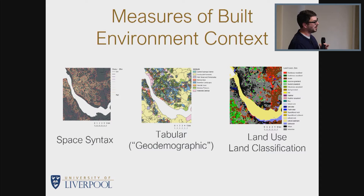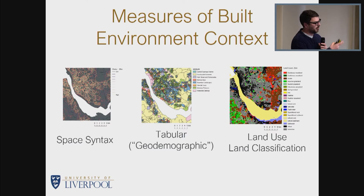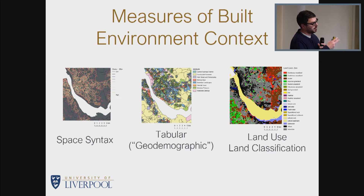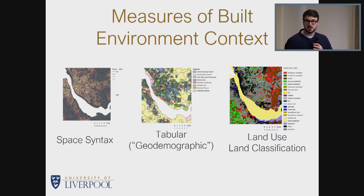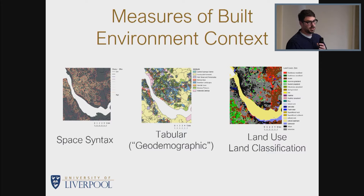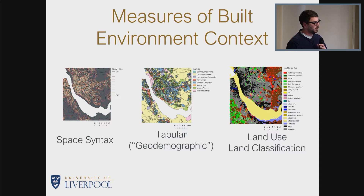Broadly speaking, my understanding of urban context involves three general approaches. The first is a morphometric approach — I've referred to this as space syntax — where we're looking at the built characteristics of network geometries and positions of buildings relative to those. A tabular approach, more broadly understood as geodemographics, incorporates both built environment and population characteristics. And then land use/land cover classifications, which tend to be on a pixel basis and derived from satellite data.